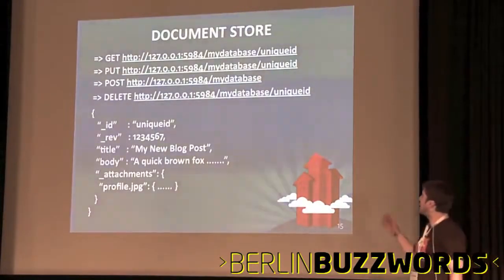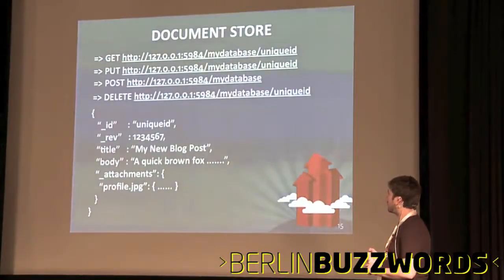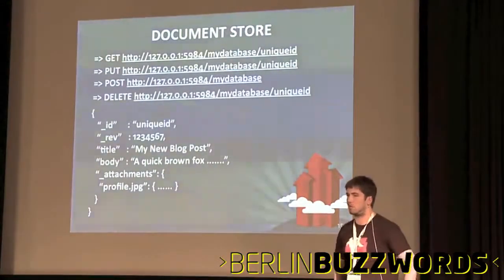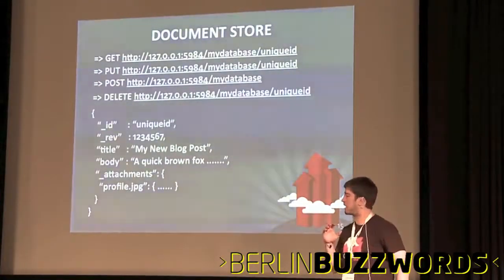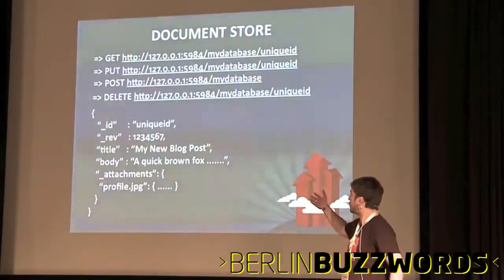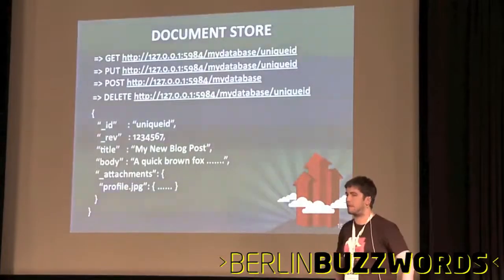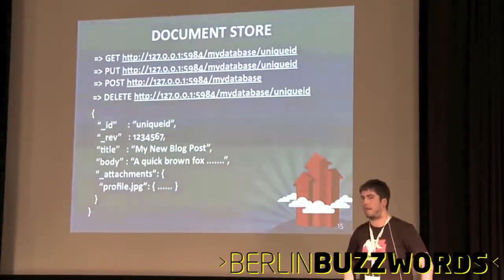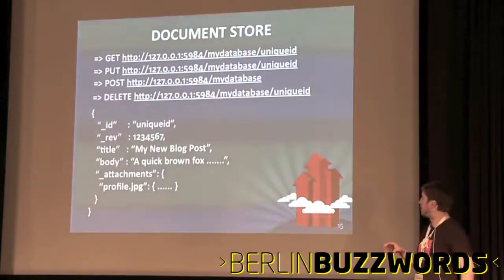Quick introduction to CouchDB. The most important things: first, it's a document store — you store plain documents, you don't have a schema, you don't need to pre-define your data. Everything is JSON — you just create a JSON document. The entire database is accessed through a REST API. Most people will use language drivers, but fundamentally they're just wrappers on top of the REST API. Every language in the world has reasonably easy-to-use HTTP interfaces.